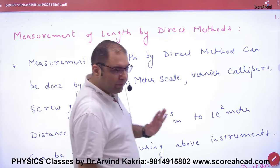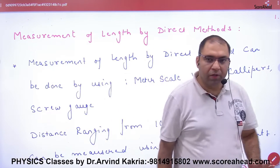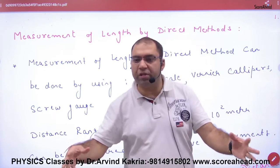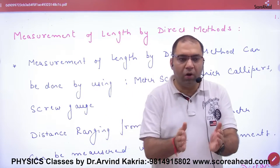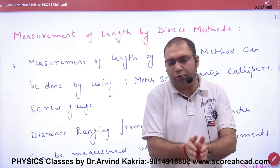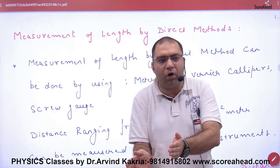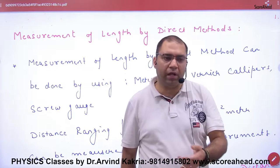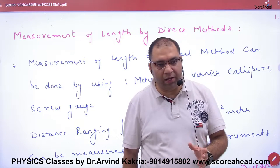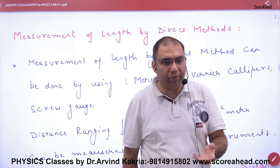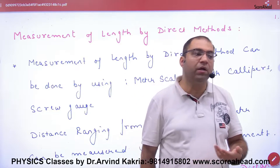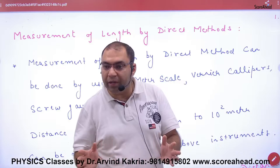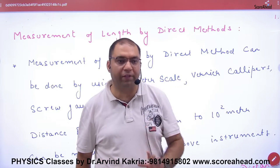Measurement of length by direct method. We are going to measure some distances. Among these, there are very small distances such as the thickness of a sheet or the radius of an atom. For such a very small distance like the radius of an atom, there is no meter scale available — you cannot simply measure it with a ruler, and there is no direct machine for it.